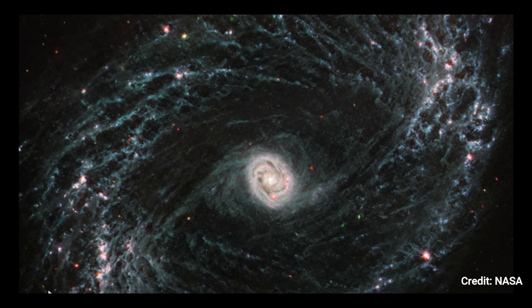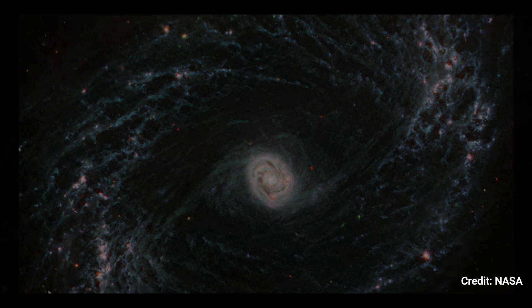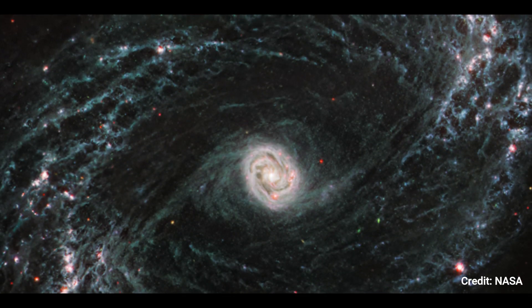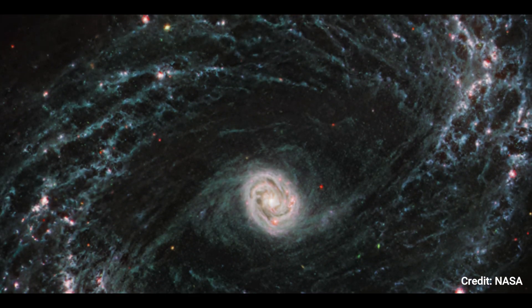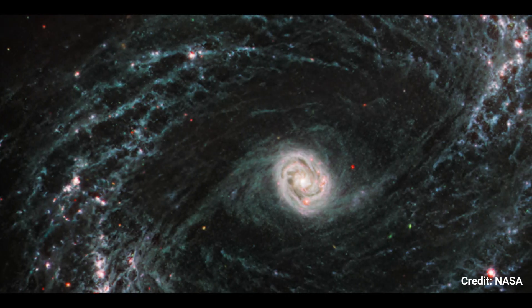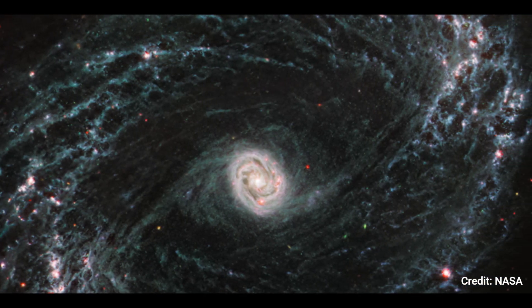Number 6: NGC 1433. Webb's mid-infrared instrument took this image of the nearby galaxy NGC 1433, which includes compass arrows, a scale bar, and a color key for reference. The north and east compass arrows indicate the image's orientation in the sky. The relationship between north and east on the sky is flipped compared to direction arrows on a ground map.